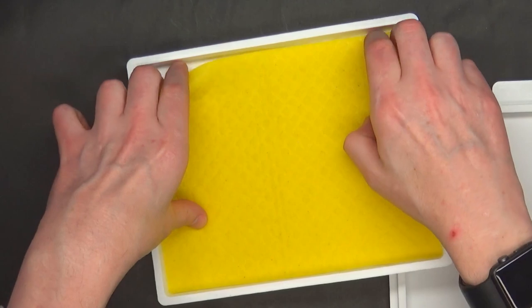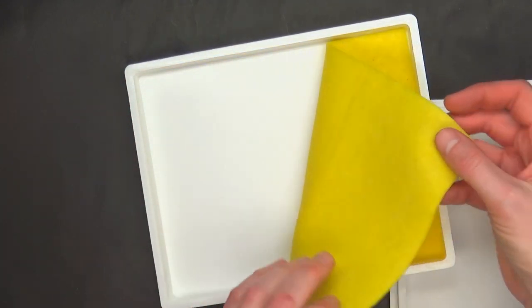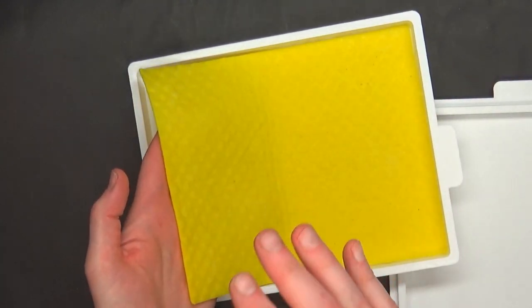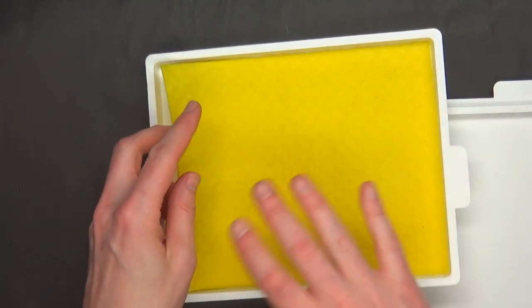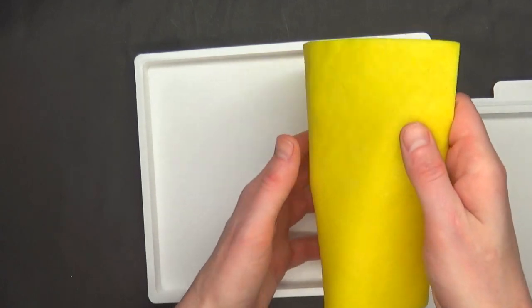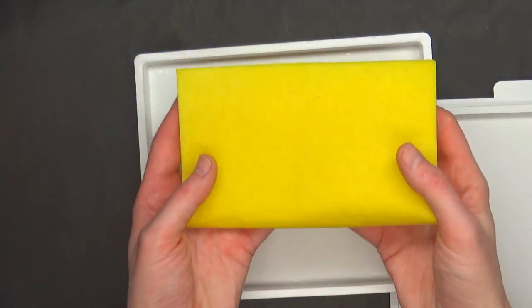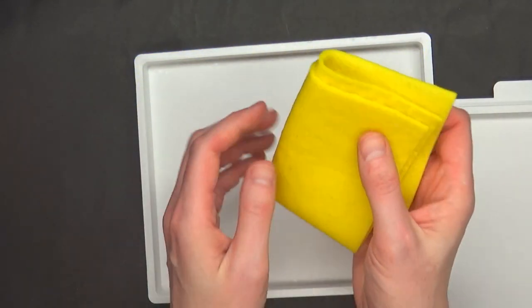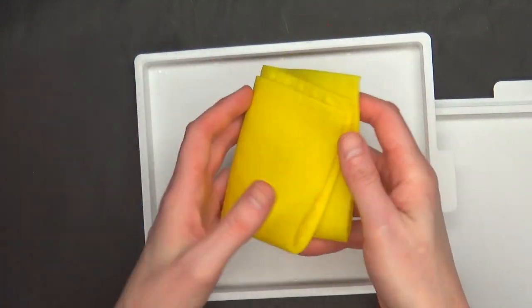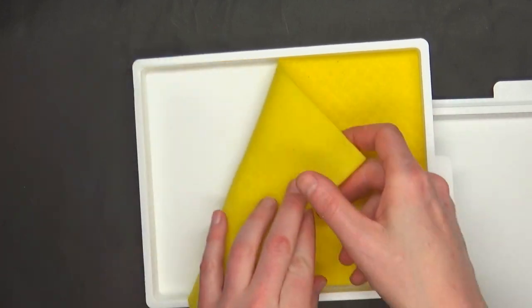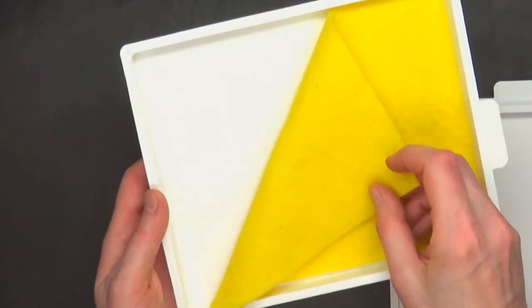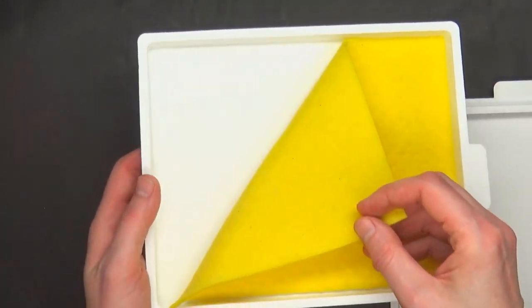Speaking of the sponge, we have gone ahead and dunked this in some water, squeezed it out once or twice because there's a little bit of surface additives on this you want to clean off. All you want to do to get this ready is wring it out about halfway to where there isn't a bunch of standing water.